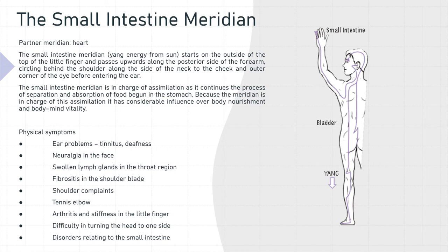The physical symptoms associated with small intestine meridian imbalance are ear problems, tinnitus and deafness, neuralgia in the face, swollen lymph glands in the throat region, fibrositis in the shoulder blade, shoulder complaints, tennis elbow, arthritis and stiffness in the little finger, difficulty in turning the head to one side, and disorders related to the small intestine.